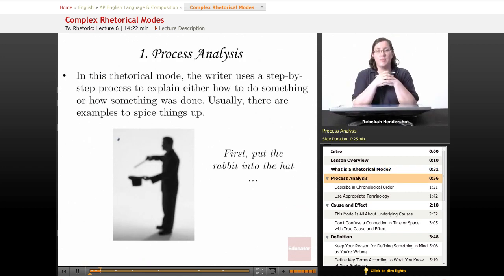Now, the first of our complex rhetorical modes is process analysis. In this mode, the writer uses a step-by-step process to explain either how to do something or how something was done. Usually, there are examples to spice things up. So it's a step-by-step explanation.